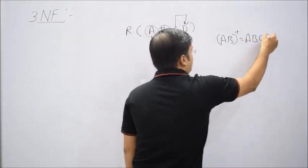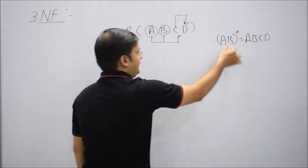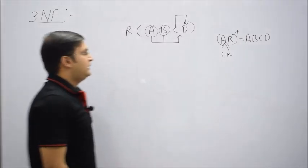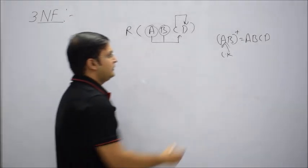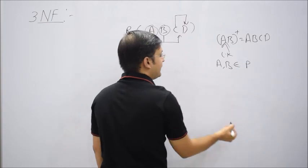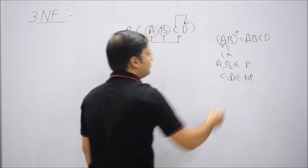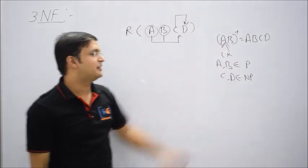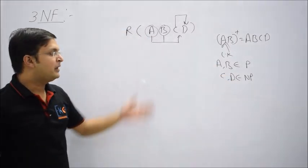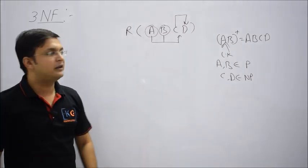So A,B is definitely a candidate key. Since A,B is a candidate key, A and B are prime attributes, and C and D are non-prime attributes. A and B are prime attributes because A,B is the candidate key, and C and D are non-prime attributes because they are not part of the candidate key.